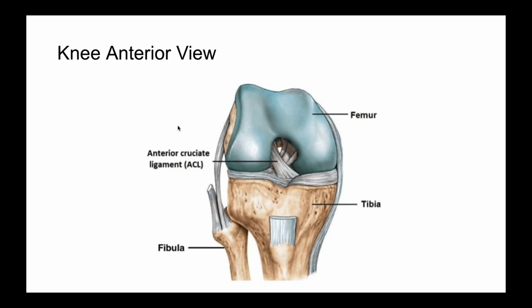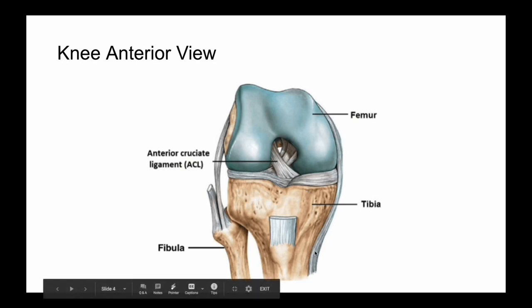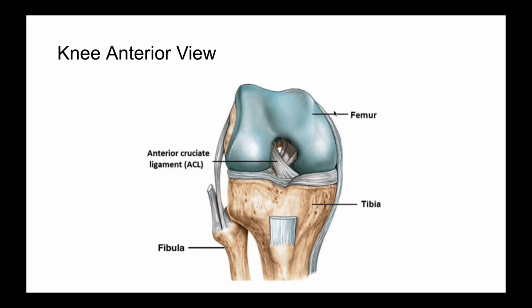Turning to the ligamentous anatomy of the knee, this image shows the four main stabilizing ligaments, which are also the most likely sources of ligamentous pathology. On the lateral aspect is the lateral collateral ligament, which prevents varus movement or outward bowing of the knee. On the medial aspect is the MCL, the medial collateral ligament, which is notably much broader than the LCL and extends far more inferiorly, beyond the tibial tuberosity. Both originate on the lateral and medial aspects of the femur, respectively.